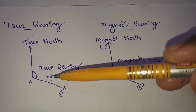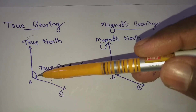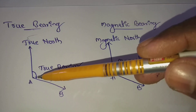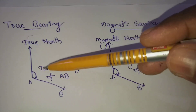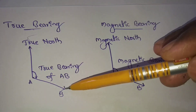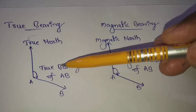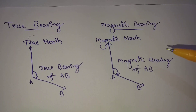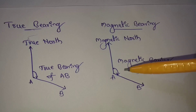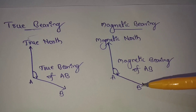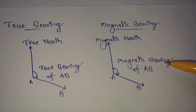So to recap: true bearing is the horizontal angle between the true meridian and the line AB — this angle is the true bearing. Magnetic bearing is also a horizontal angle, between the magnetic north and the line AB — this is the magnetic bearing of AB. Those are the definitions of true bearing and magnetic bearing.